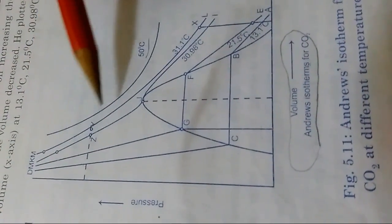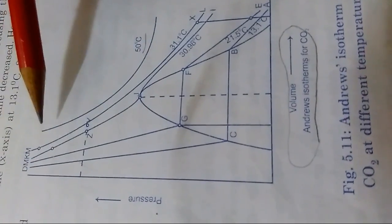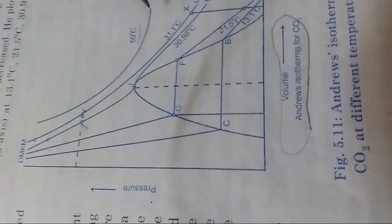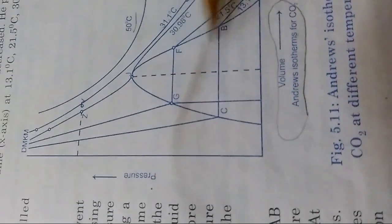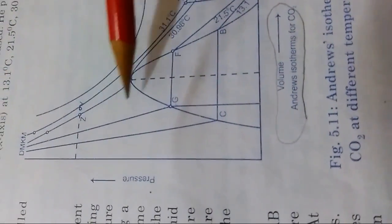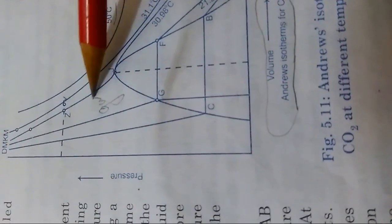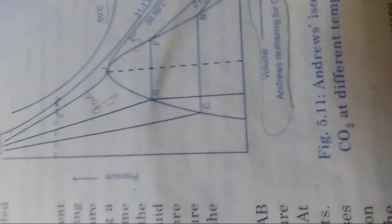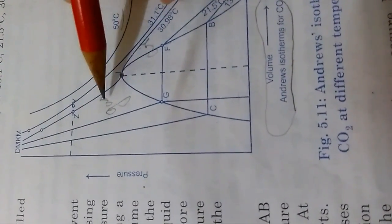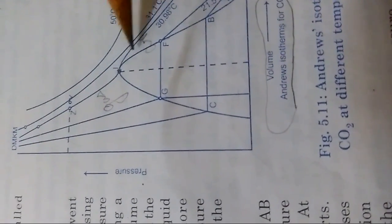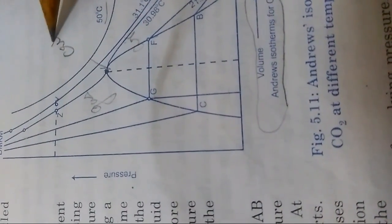What you have to remember is from gas state it's getting converted to liquid. At 50 degrees, even increasing pressure this much, nothing is going to happen and it's not getting converted to liquid. As it enters this particular graph, when it touches here, that is the point where gas gets converted to liquid. That point is called the critical point.